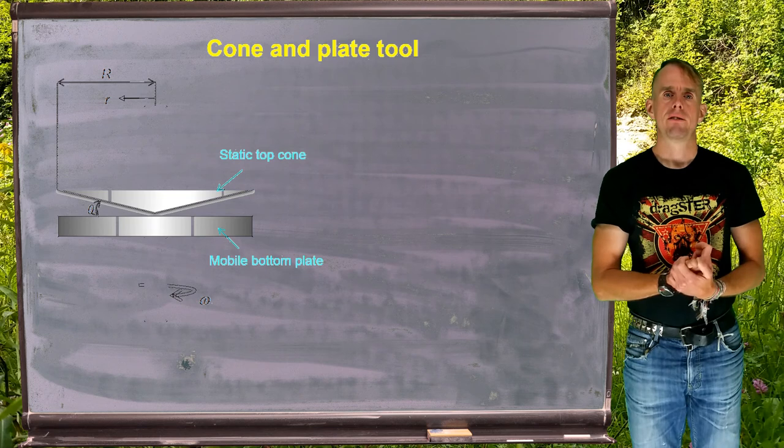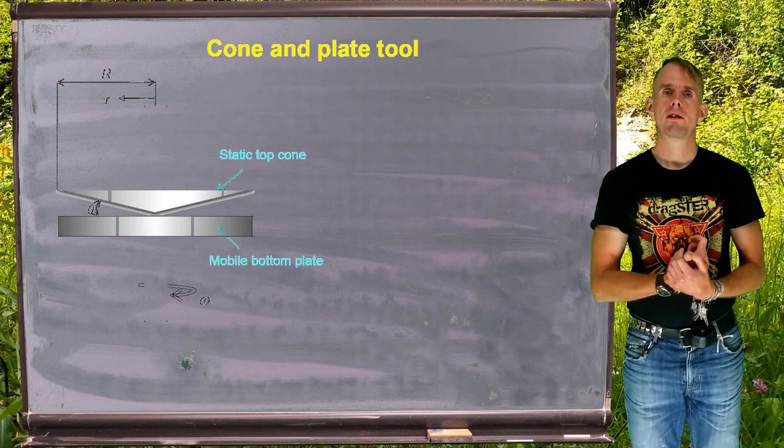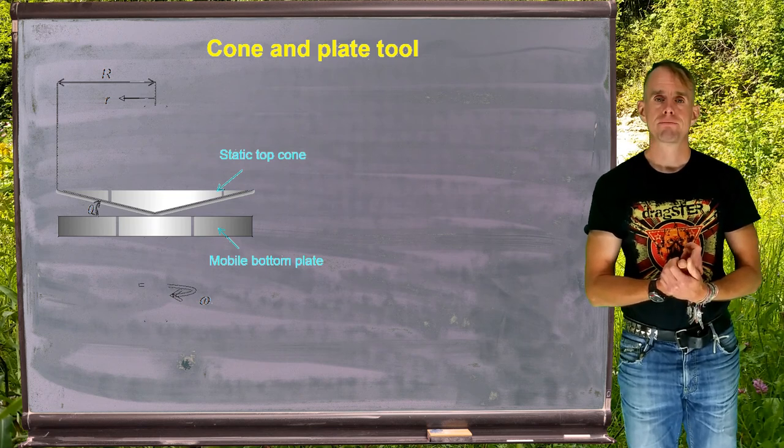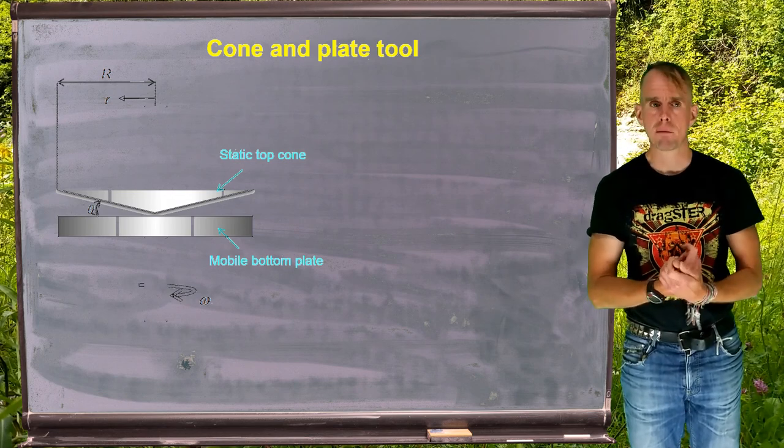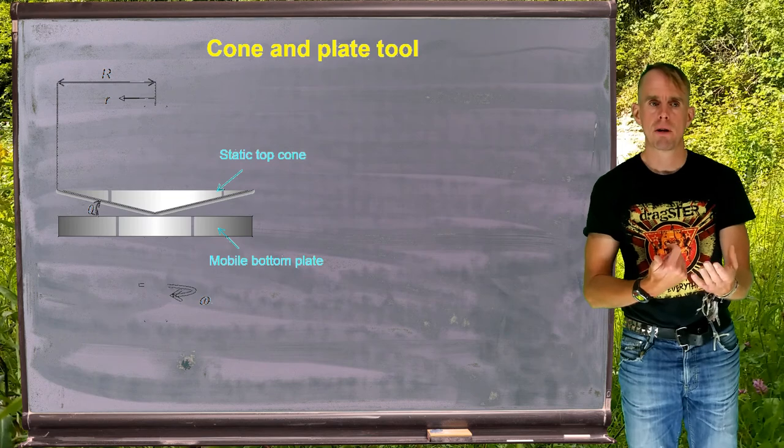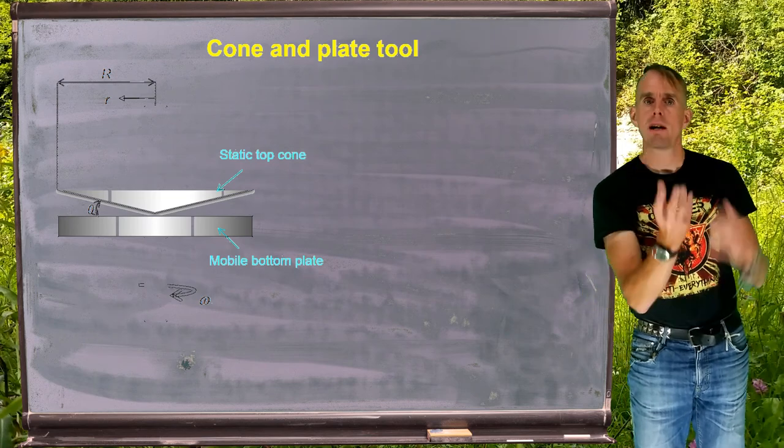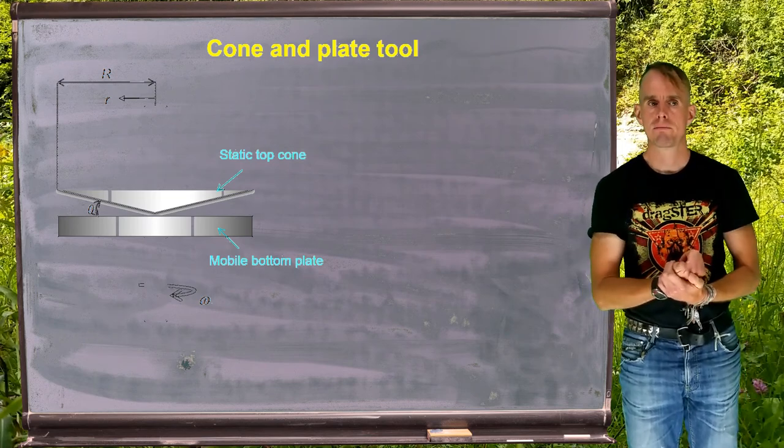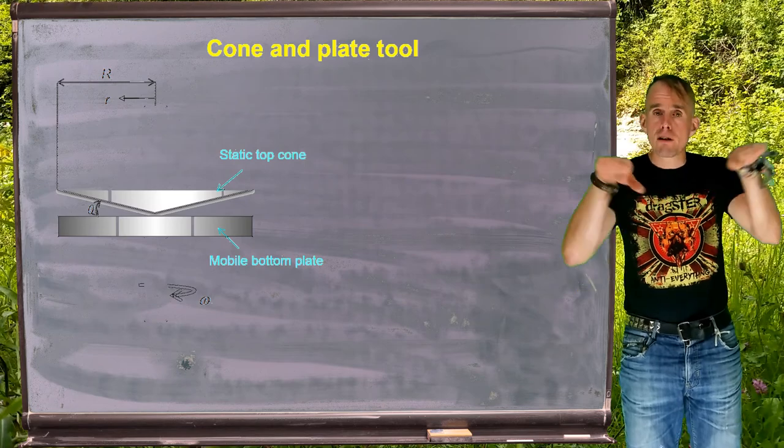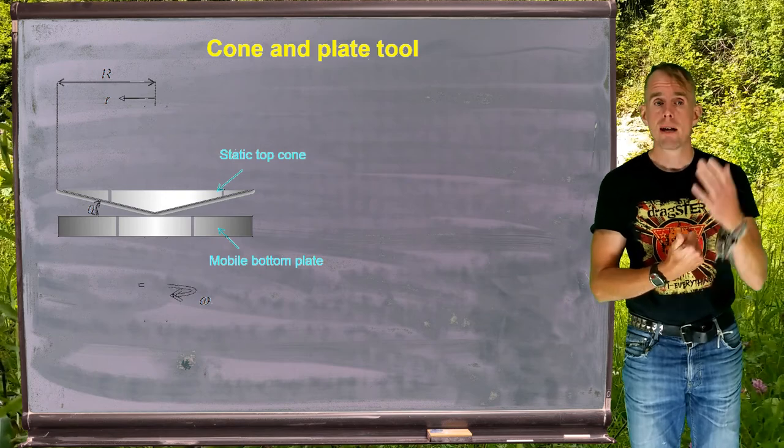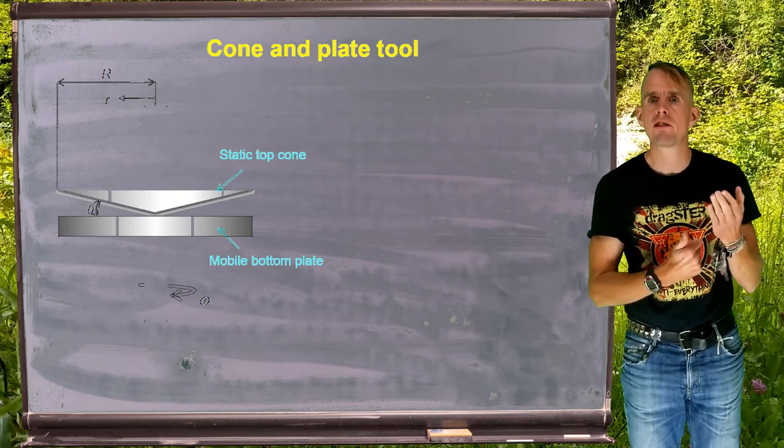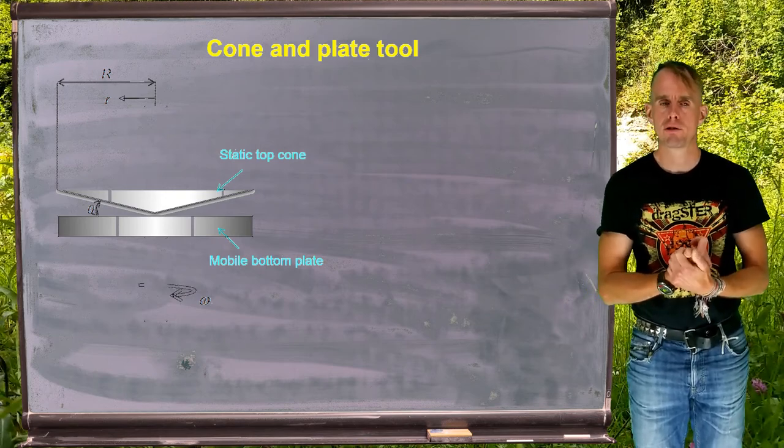The previous slide on the blackboard illustrated two parallel plates. An ideal geometry that we might want to use is not actually two parallel plates, it's a cone and a plate, where the plate moves and the cone is held stationary. The divergent angle of the cone, theta, on the blackboard is typically very, very small. Let's see why this is an ideal geometry to use, first of all.